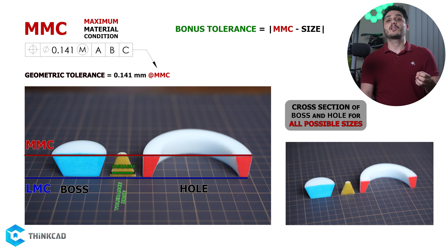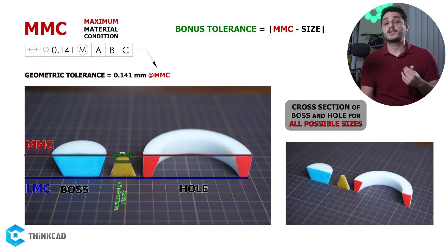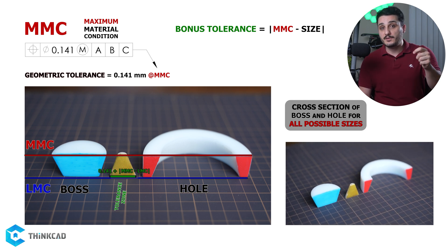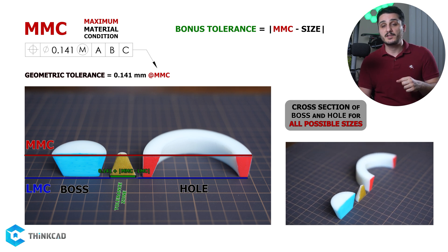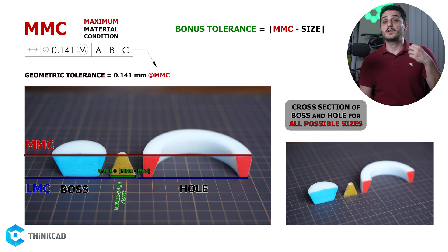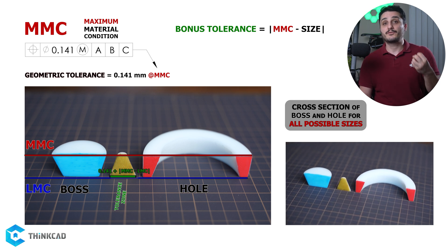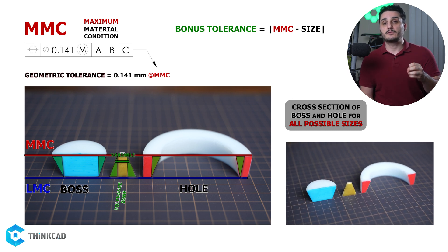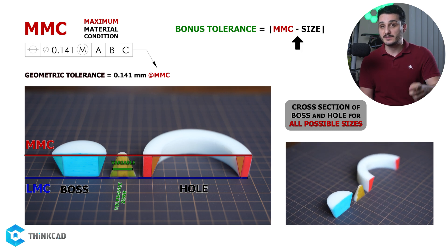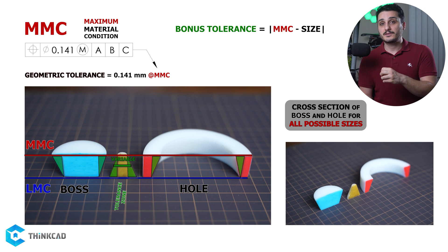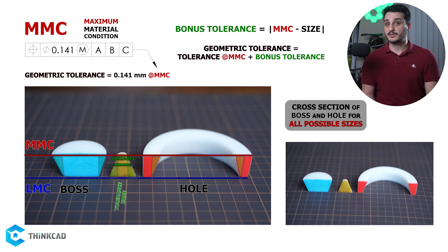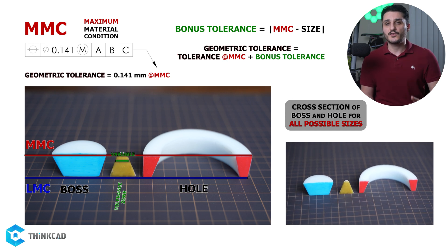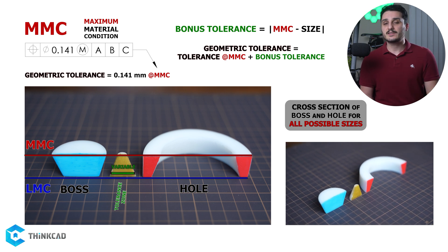Our geometric tolerance isn't constant anymore — it changes based on what size each of our two features are. At LMC, our geometric tolerance is the original 0.141 mm plus the size difference between our MMC and LMC, because that is how far we are from MMC. In general terms, our bonus tolerance is the absolute value of our MMC minus our size. You get to add this bonus tolerance to the geometric tolerance of 0.141 mm. This is incredibly useful when dealing with assemblies and can save a ton of money.